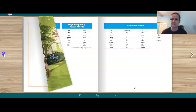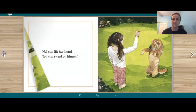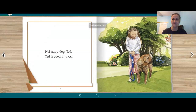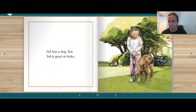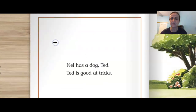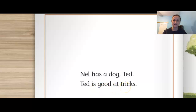Now, I want to go back to the beginning and take a look at some of the words in this story and think about our Fundations lesson. Right here on this page: Nell has a dog, Ted. Ted is good at tricks. I see some CVC words here.